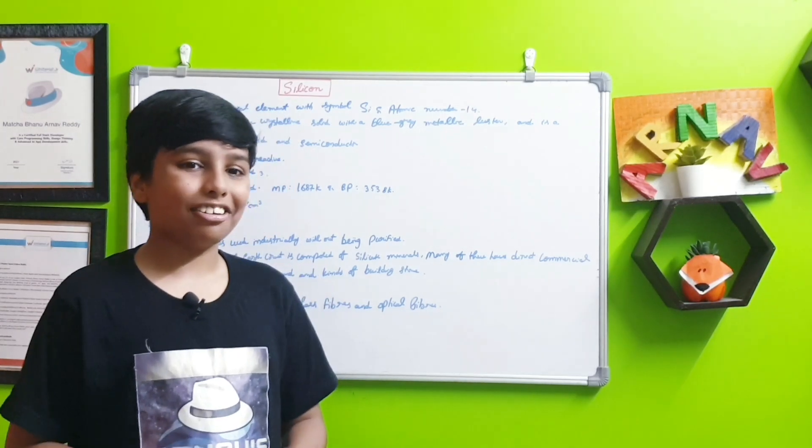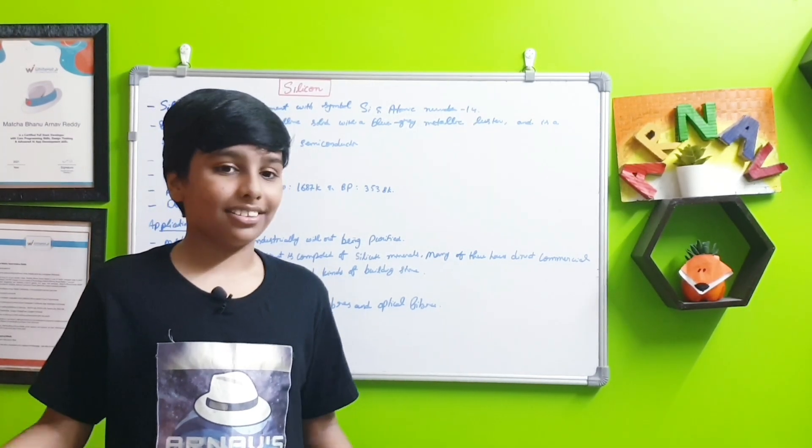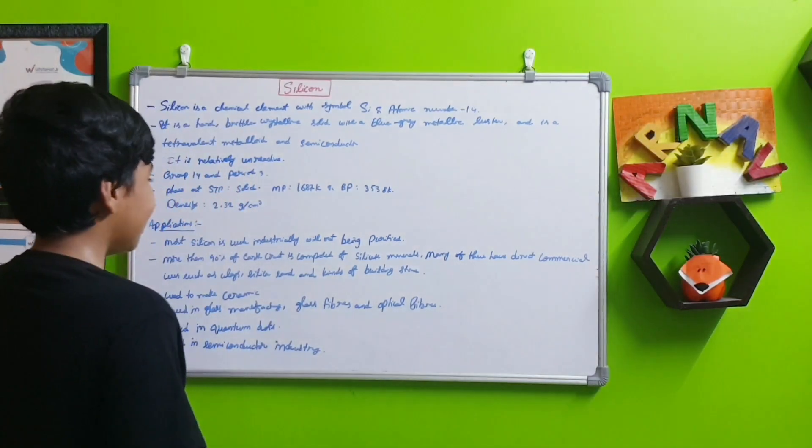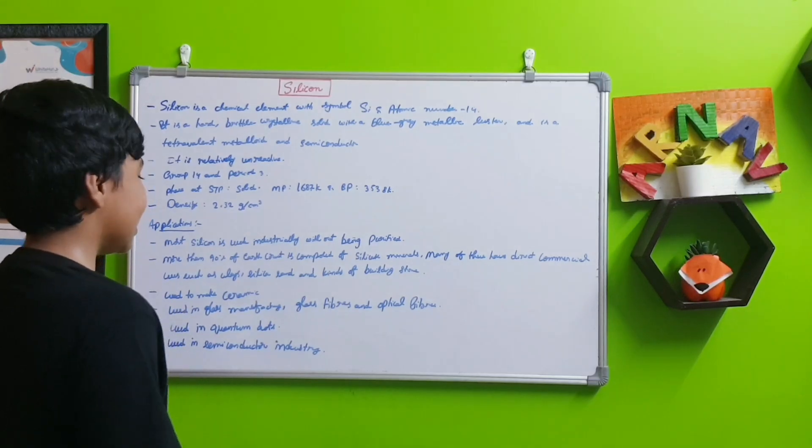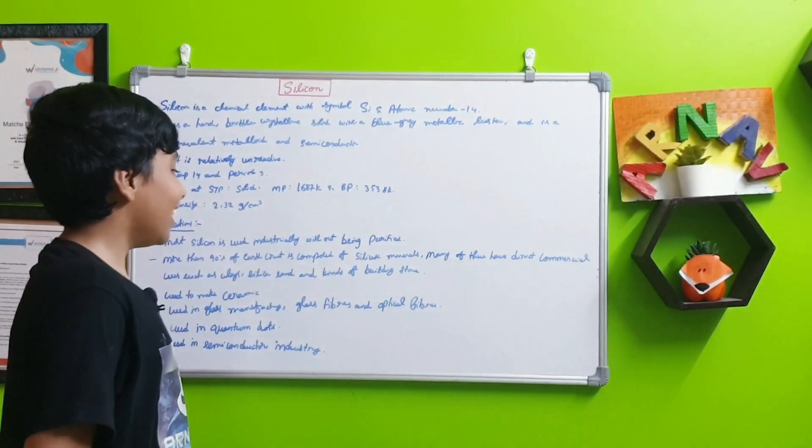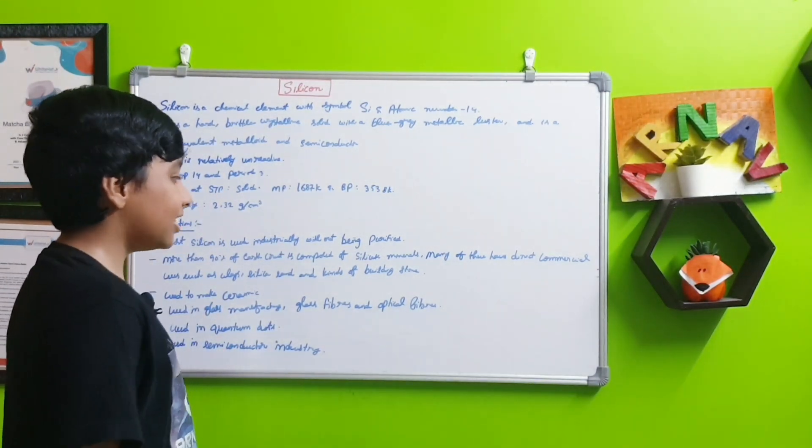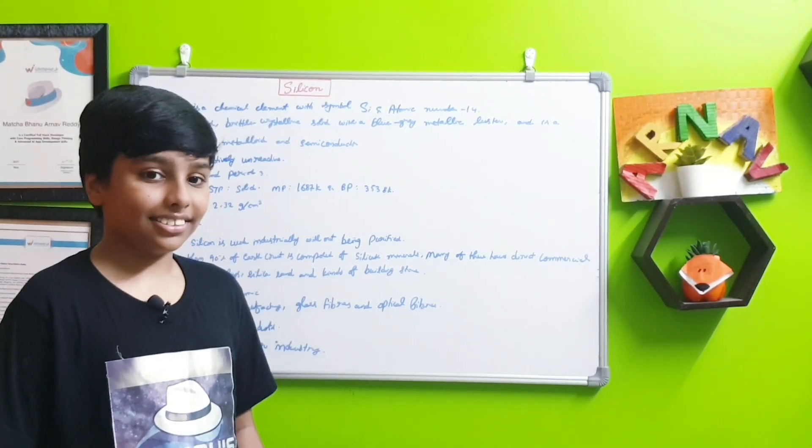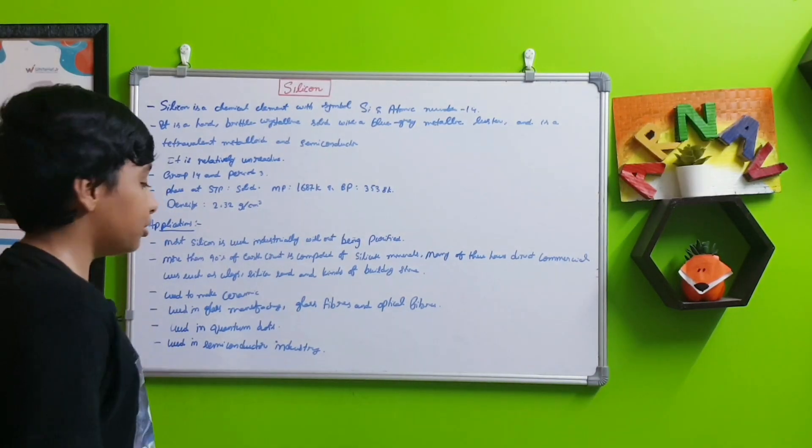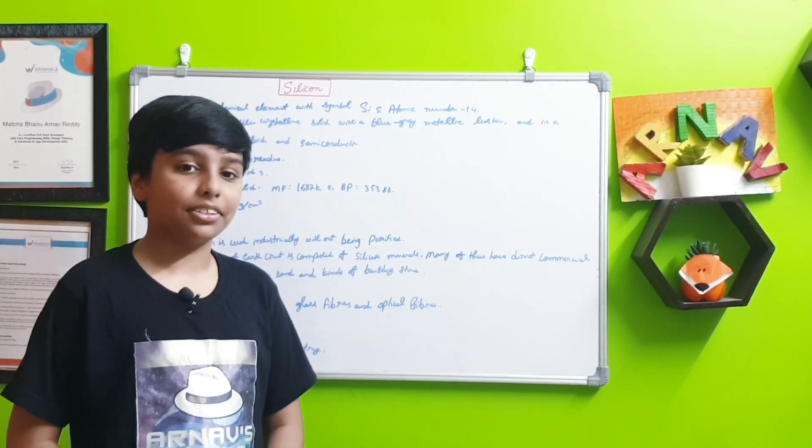Rocks are basically silicon plus oxygen plus many other smaller elements. Many of these have direct commercial uses such as clay, silica sand, and building stone. These silica rocks are used commercially.